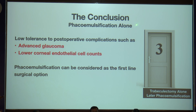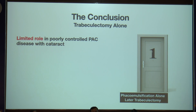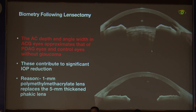If you choose phaco emulsification alone — when do you say you will go only for phaco? When the patient has advanced glaucoma and low corneal endothelial cell count. Trabeculectomy alone has very minimal role if there is a cataract and primary angle closure disease, because it doesn't solve the cataract problem.